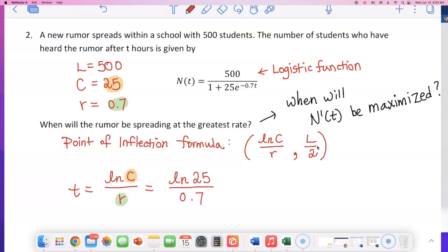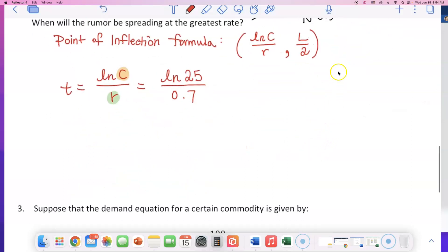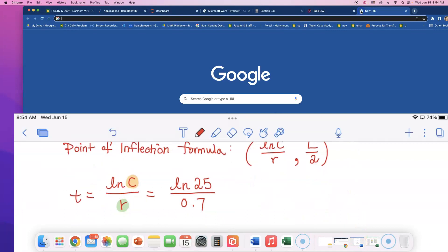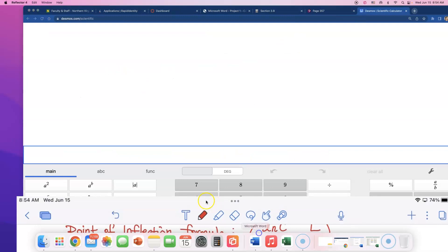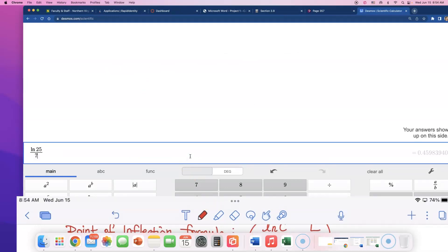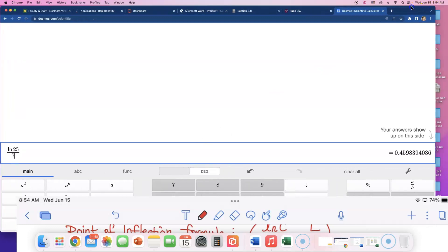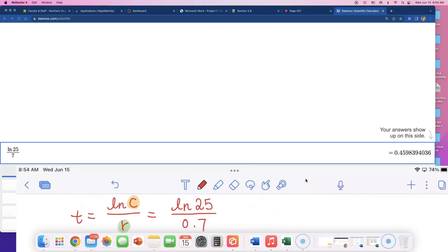So how many hours? And this rumor is spreading in this school. So let me go and open up a scientific calculator and type that in. Desmos scientific. So I need to evaluate what natural log of 25 divided by 0.7 is. And that comes out to be about, wow. That rumor is spreading very fast. I'll go write down this number. Approximately, I'll just round this up. Approximately 0.46 hours.